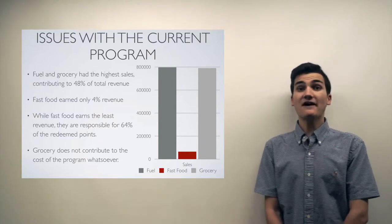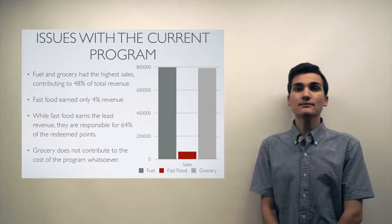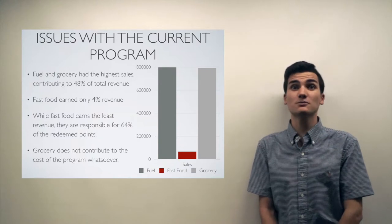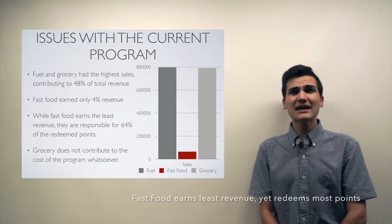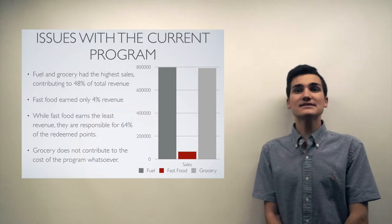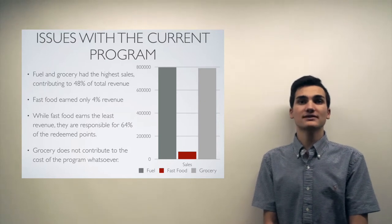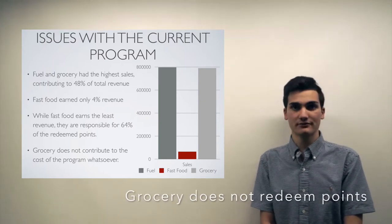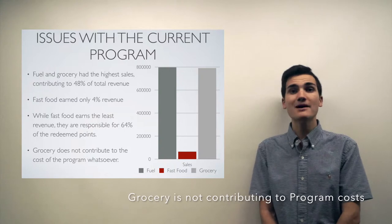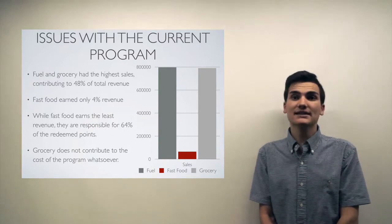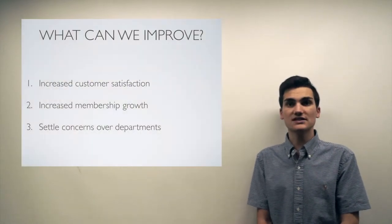Fuel and grocery had the highest sales, contributing to 48% of total revenue. Fast food only earned 4% of revenue — a big difference between departments. However, whilst fast food earns the least revenue, it is responsible for a massive 64% of redeemed points. This means fast food is the least-earning department yet honors the highest value of discounts — a major issue for the longevity and profitability of the program. Interestingly, grocery, the second largest department, offers zero percent of point redemption, meaning it is not contributing towards the cost of the program by validating discounts in store, and its presence does not offer an overwhelming amount of additional sales.